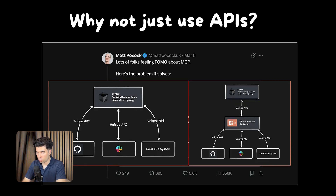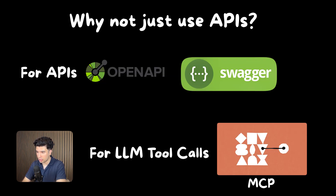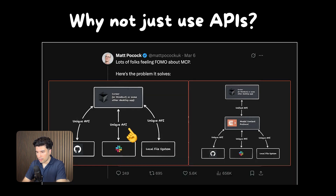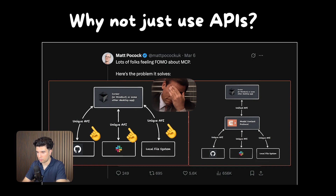But you might ask, why are we not just using APIs instead? Well, MCP is similar to Swagger or OpenAPI for HTTP APIs, but specialized for LLM tool calls. APIs already exist for connecting systems to AI agents, but in practice, every API has its own unique format, documentation, and authentication method, creating a massive integration headache for developers.